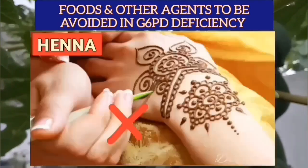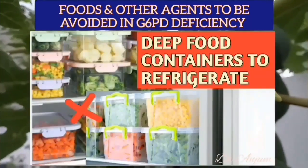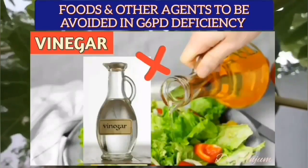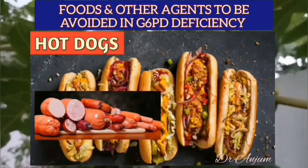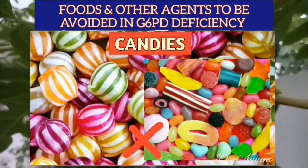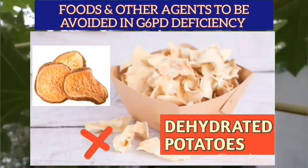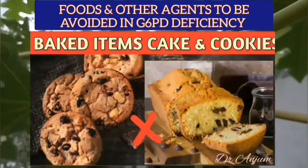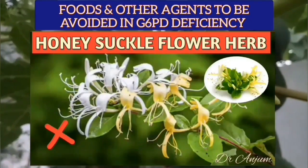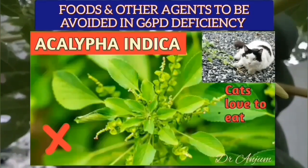Further items to avoid include cumin, moth balls, hina, chemical or gaseous sterilization of surgical instruments, deep food containers for refrigeration, canned soups, tomato ketchup and vinegar, hot dogs, processed meat, canned fish, candies, noodles, dehydrated potatoes, crackers, baked items like cakes and cookies, blueberries, honeysuckle flower herb, chimanthus flower, figwort flower, and Eclipta indica.